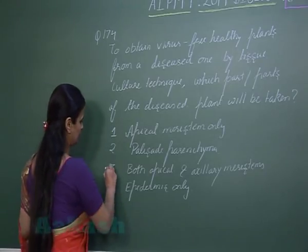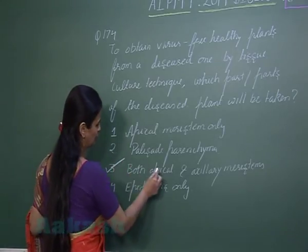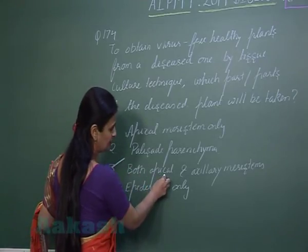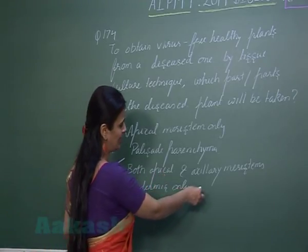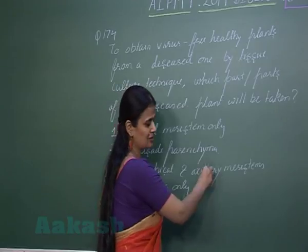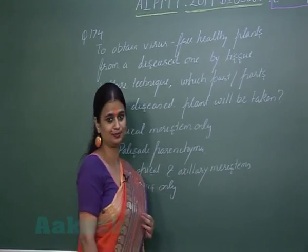The right option is option number 3. We can use apical as well as axillary meristem.